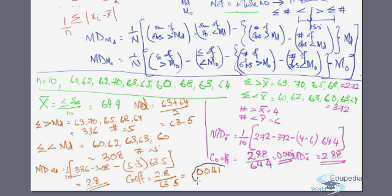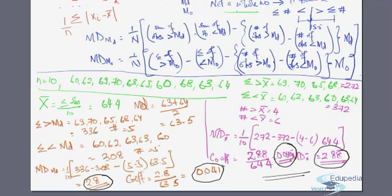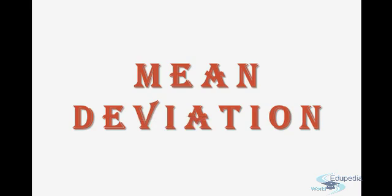So 0.041 is the coefficient, and 2.8 is the absolute value of mean deviation from median. Mean deviation from mode is also possible once the mode is determined — the process after that is the same. That was the treatment with raw data, where both the mean and median were decimals and we used the second form of the formula. We are yet to practice the first form, and we need to practice questions with frequency distribution, which we shall take up in the upcoming videos. Keep watching EdupediaWorld videos, thank you.